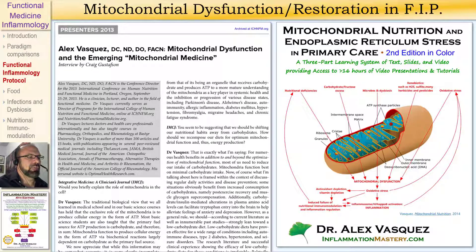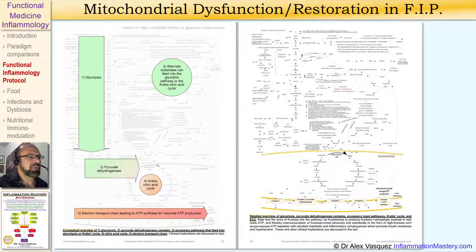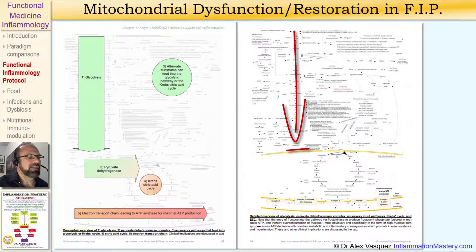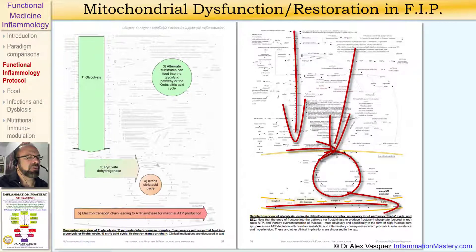Let's take a look at mitochondrial function to provide a quick overview. We all know that the production of cellular energy begins with a process of glycolysis, then we go through the pyruvate dehydrogenase complex, we enter the Krebs cycle, and then those final remaining substrates are shuttled through the electron transport chain. When I'm teaching this information to students, I typically introduce the topic in a rather simplistic manner, and we talk about five main components to cellular energy production.